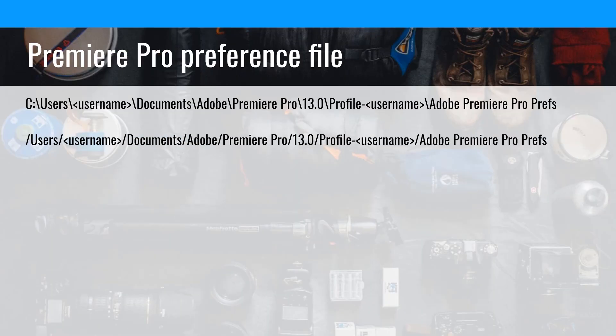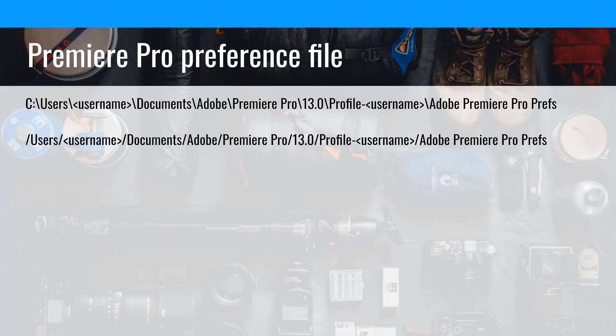Next up is the Premiere Pro preference file — this is the one you want to delete when things go bad. On Mac you hold Option and Shift, on Windows it's Alt and Shift to delete it. This preferences file is also in the Documents folder, under Adobe, Premiere Pro, the version number, then profile and your username. So your prefs are in that same location.